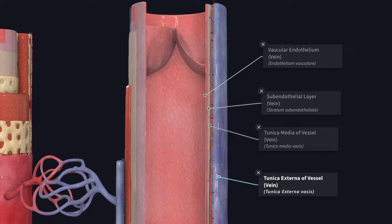Because of these differences, the wall of the vein is easily compressed. After death the veins are usually collapsed. In contrast, the arteries retain their patency.